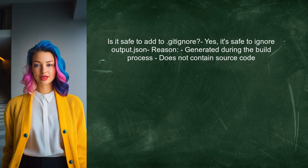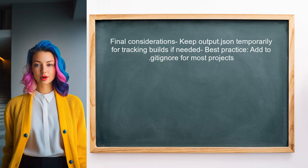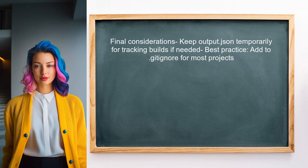You may wonder if this file is safe to add to the .gitignore file. Generally, since this file is generated during the build process and does not contain source code, it is safe to ignore it in version control. If you want to keep track of specific builds or configurations, you might consider keeping this file temporarily. However, for most projects, adding it to .gitignore is a good practice.